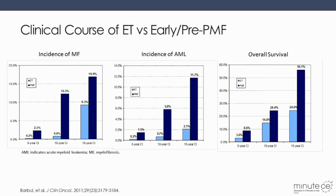Now, why does it matter? It does matter because the clinical course of patients with ET differs from the clinical course of patients with early or pre-fibrotic myelofibrosis. The difference exists in incidence of transformation to overt myelofibrosis, transformation to acute myeloid leukemia, as well as in overall survival. These differences are pronounced when we look beyond 10 years, and the differences are evident at 10 or 15 years from diagnosis.